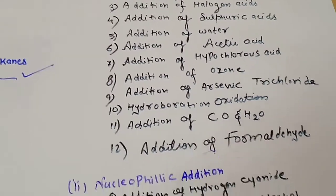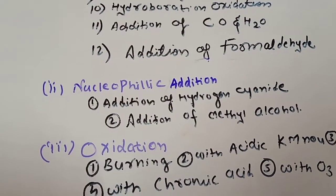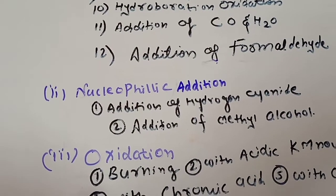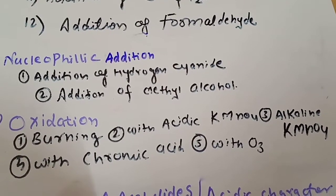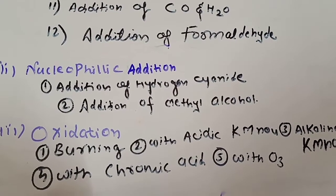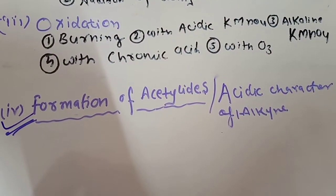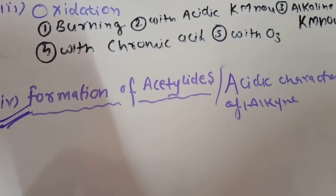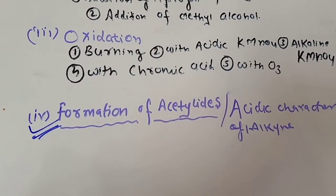For nucleophilic addition reactions, alkynes give two reactions: addition of hydrogen cyanide and addition of methyl alcohol. Oxidations can be done with acidic KMnO4, alkaline KMnO4, chromic acid, ozone, and by burning. The last and most important reaction for alkynes is the formation of acetylides, which is mainly due to the presence of the acidic hydrogens in the alkynes.